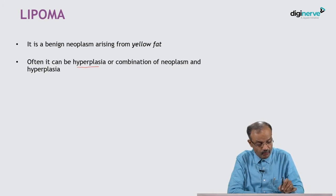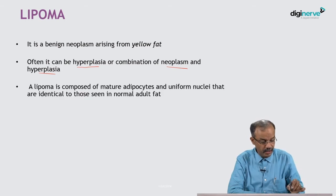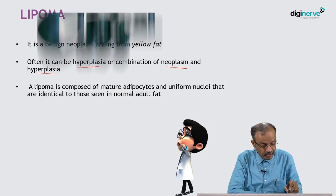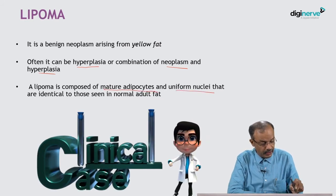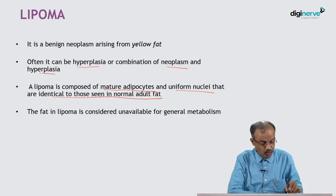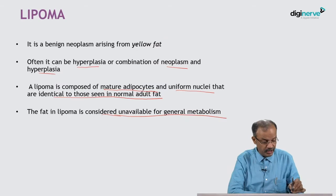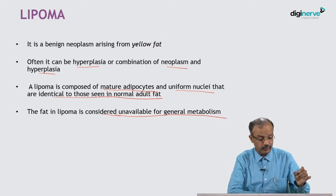Often it can be hyperplasia or a combination of neoplasm and hyperplasia. It contains mature adipocytes with uniform nuclei which are identical to those seen in normal adult fat. So it looks the same as normal adult fat, but fat in the lipoma is considered unavailable for metabolic activity of the patient, unlike normal fat which is available for all metabolic activities.